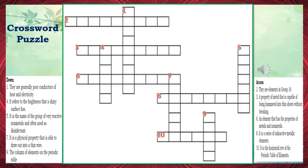Number 10: It is the horizontal row of the periodic table of elements. The correct answer is period. Number 11: They are generally poor conductors of heat and electricity. The correct answer is non-metals.